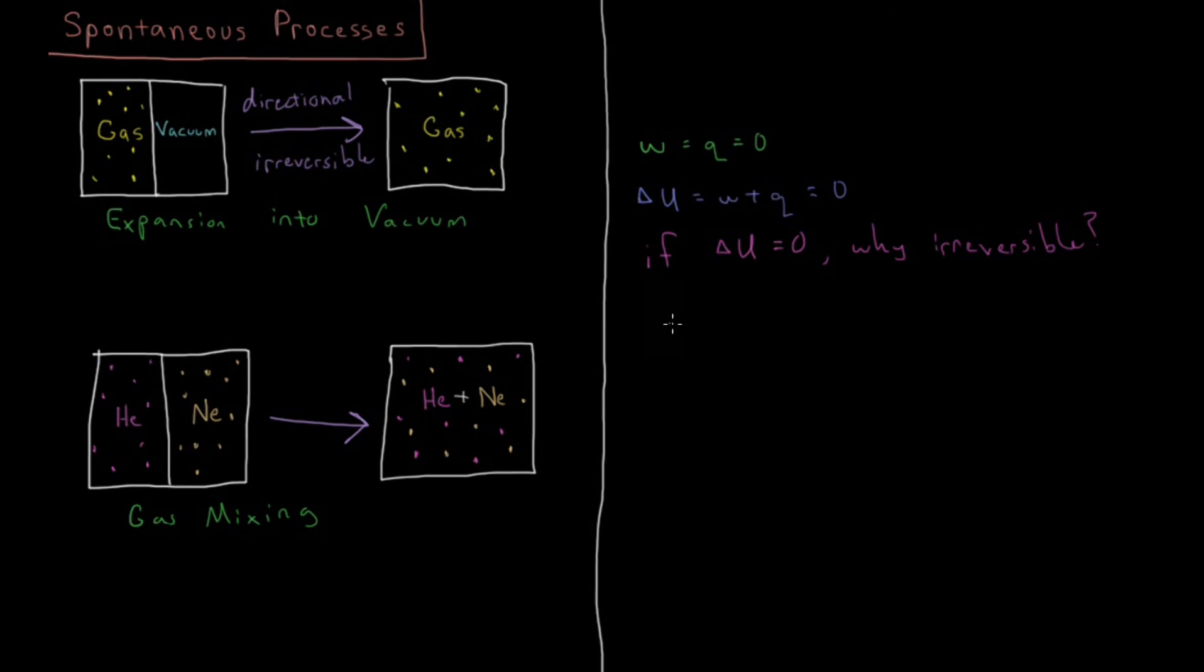So the characteristic that we're looking for is that in all of these cases we have increasing disorder. So when there's no energy change and there's no clues with respect to energy which direction an irreversible process should go, we're going to look for the direction which increases disorder.